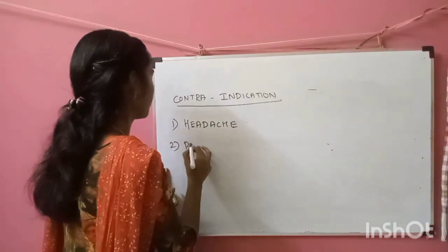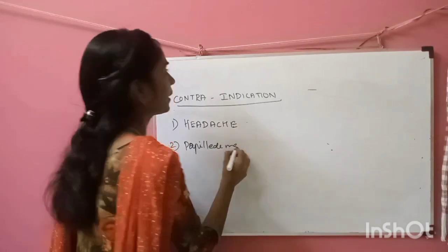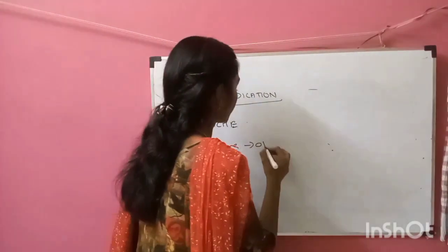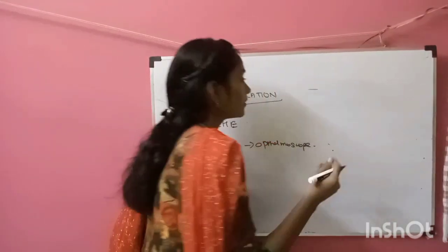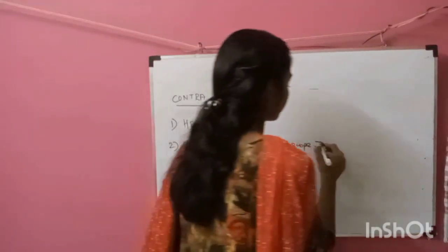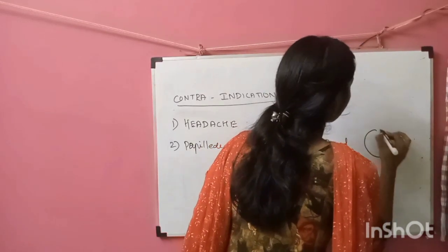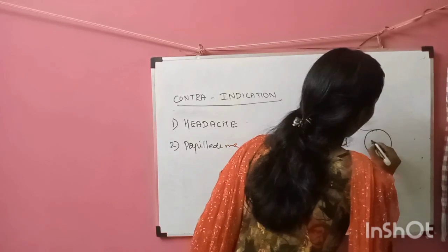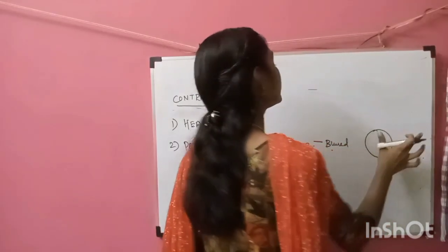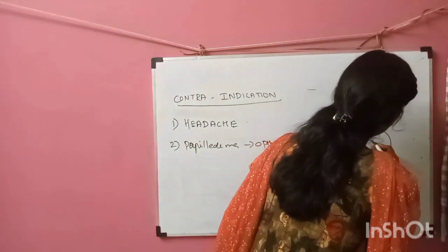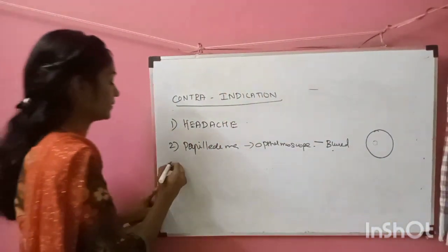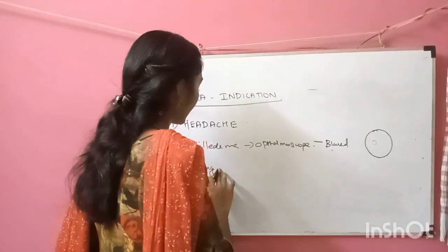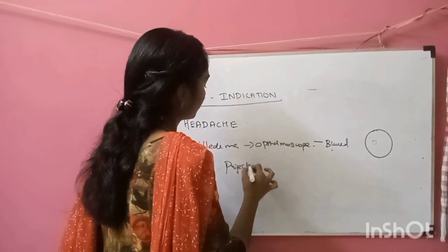Second is papilledema. When we examine the patient's eye through the ophthalmoscope, in a normal eye the optic disc will be clear. But in a patient with increased intracranial pressure, the optic disc will be blurred due to the raised pressure. Third is vomiting — if the patient has a history of vomiting, it will be projectile, that is, forceful vomiting.